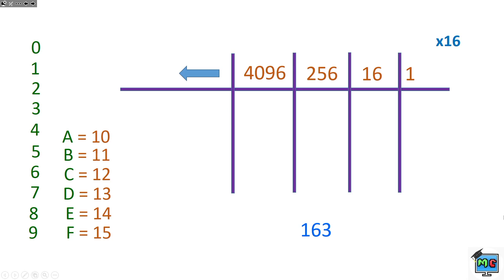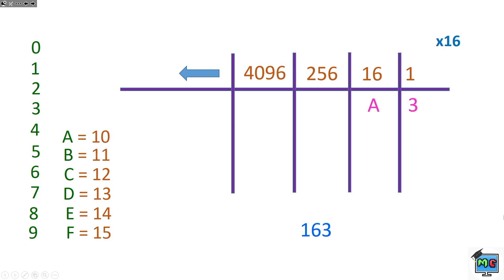How many lots of 16 do we need to get closest to 163? 10 lots of 16. We have a symbol for 10 — it's a. If we put a in the 16 column, that means 10 times 16, which makes 160. How much more do we need to make 163? Three. We have a symbol for 3, so we put 3 in the units column. So a3 equals 163 in base 10.